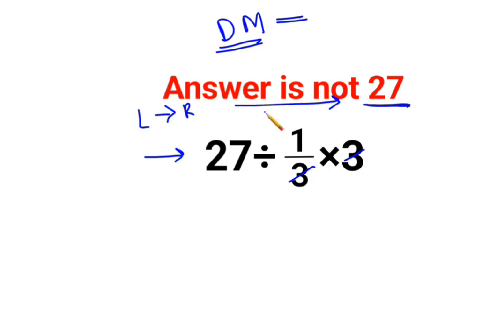So the first operation which we need to do is 27 divided by 1 upon 3. Now whenever there is division you need to follow the rule of K, C, F.